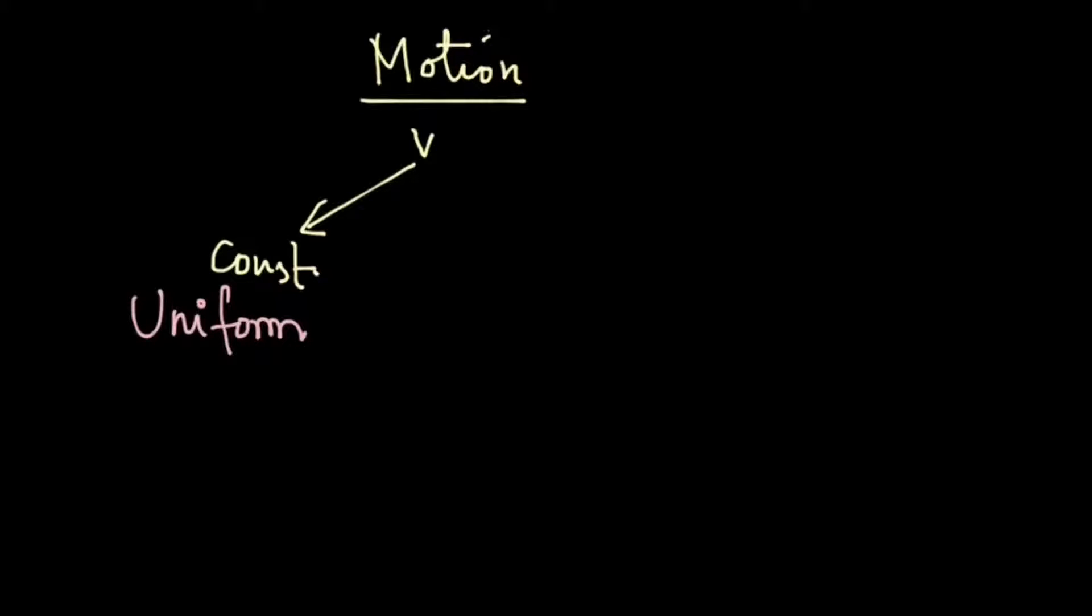For uniform motion velocity should be constant, and if the velocity is changing then the motion is not uniform. So the motion will be called non-uniform.